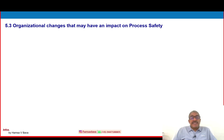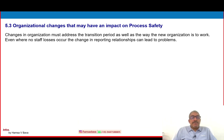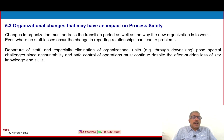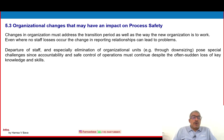5.3 — organizational changes that may have an impact on process safety. Changes in organization must address the transition period as well as the way the new organization is to work. Even where no staff losses occur, the change in reporting relationships can lead to problems. Departure of staff, and especially elimination of organizational units through downsizing, poses special challenges, since accountability and safe control of operations must continue despite the often sudden loss of key knowledge and skills.